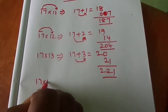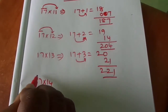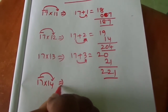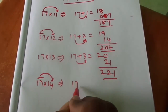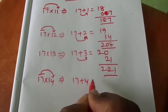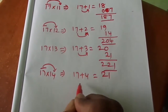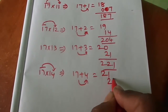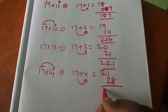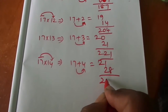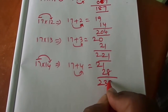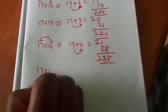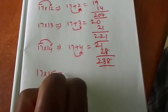17 14s: 17 plus 4 is 21. 7 fours are 28. Total is 238.